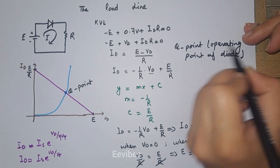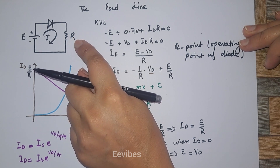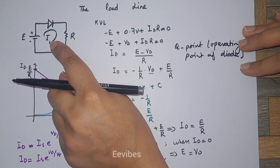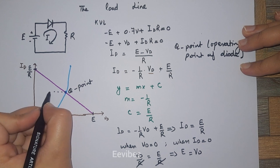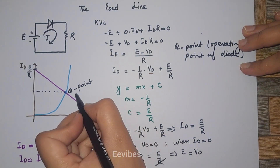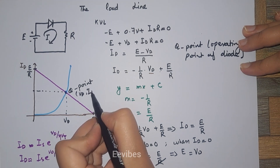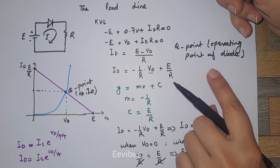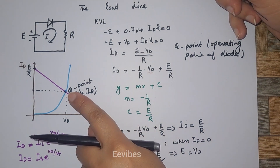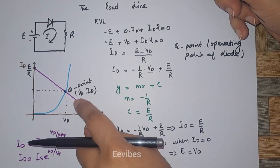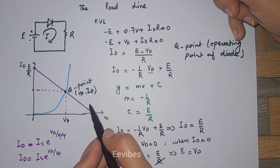The Q-point means that for a fixed supply voltage E and a fixed resistance R, a certain current ID is established in the circuit, along with a corresponding VD. These values can be found by projecting from the intersection point. This straight line equation is also known as the DC load line, and its intersection with the diode current equation gives us the Q-point.